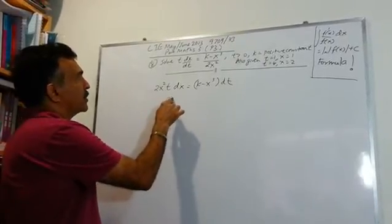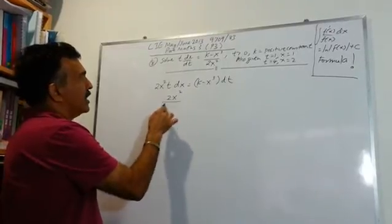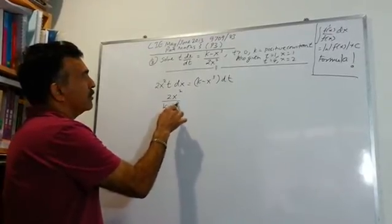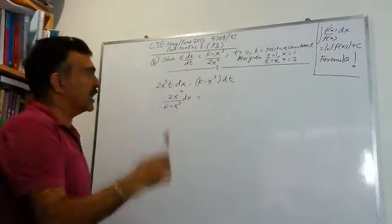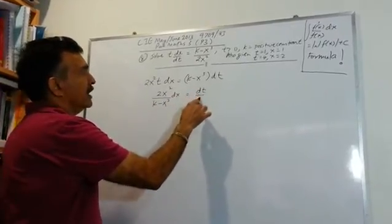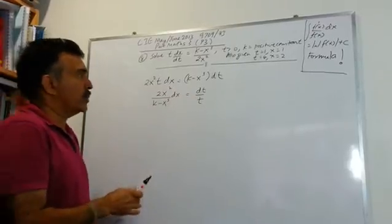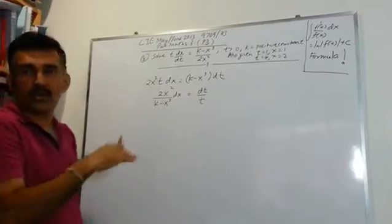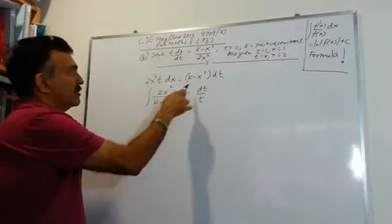We have 2x² over (k - x³) dx, and let's move the t to the other side. We will get dt over t. So now when you have written your expression like this, you can introduce your integration symbol.